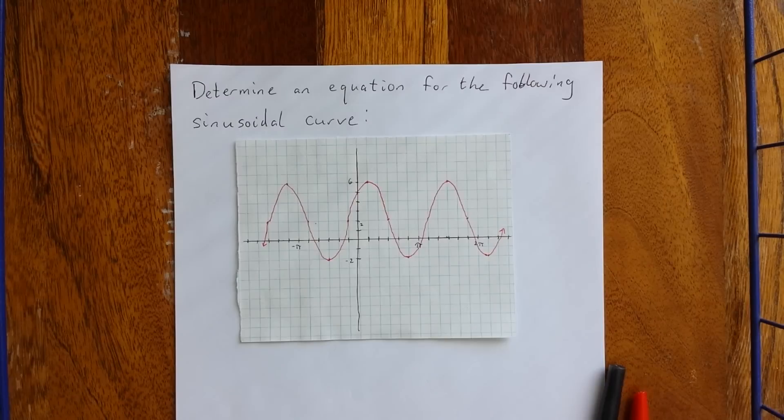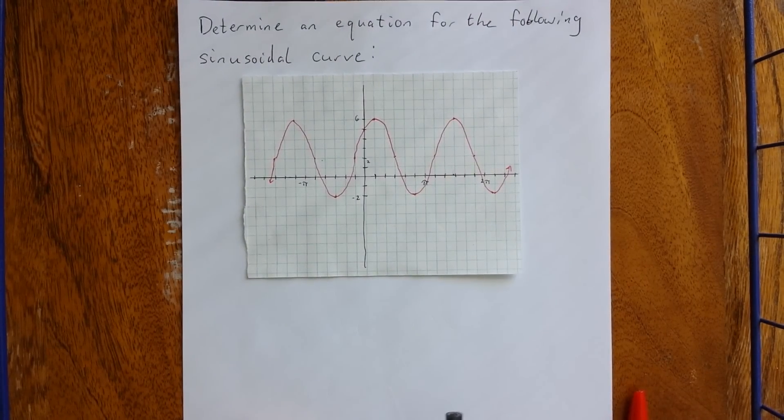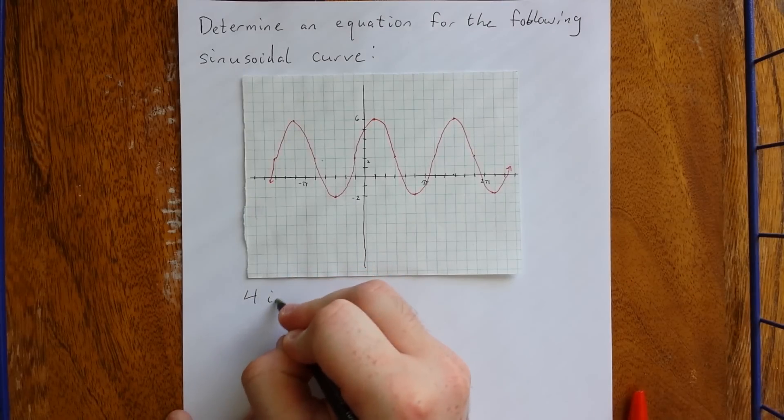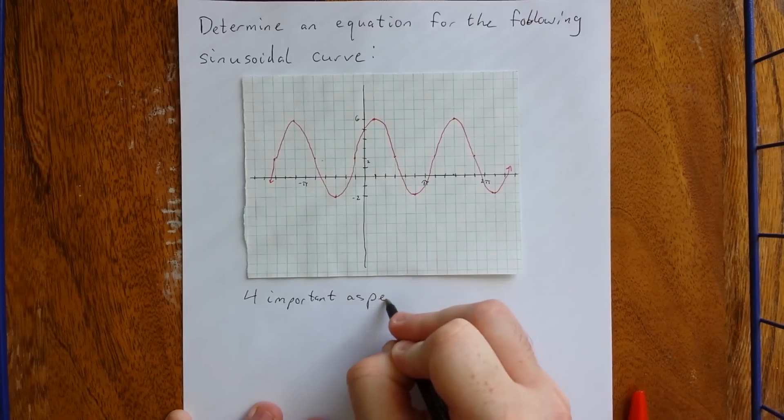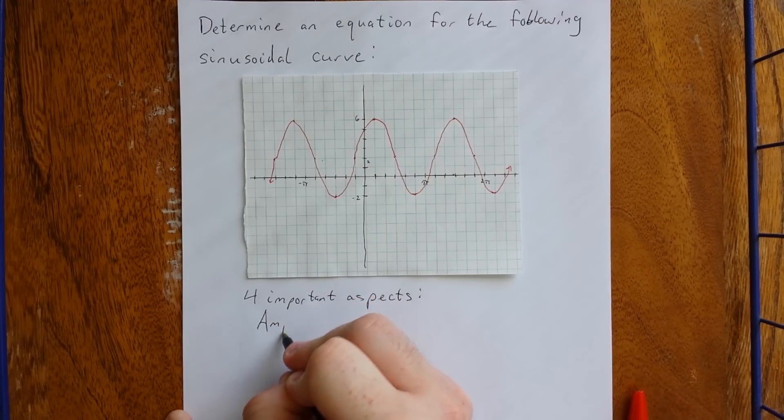So when determining the equation for a sinusoidal curve, there are going to be four important aspects for us to look for. The first one is referred to as the amplitude.